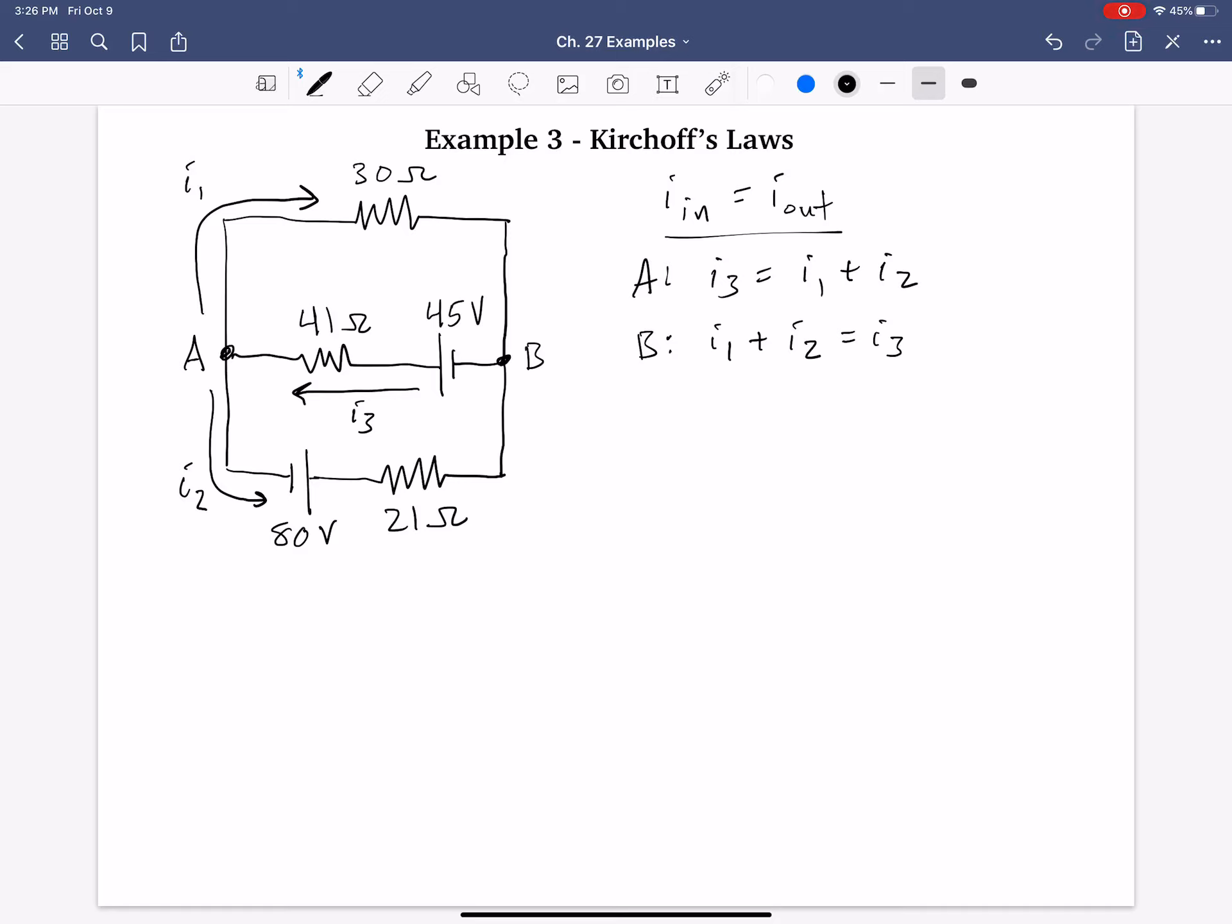Now, the voltage rule, that is for all potentials, all change in voltages across all loops, that has to be zero. So let's call this loop one. Let's call this one down here loop two, and the one around the outside I'll call loop three.